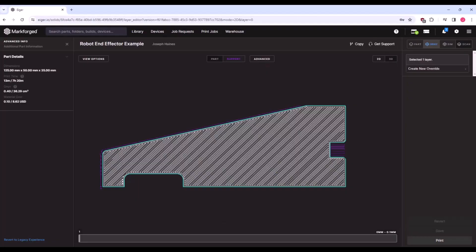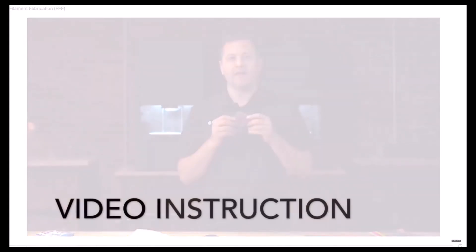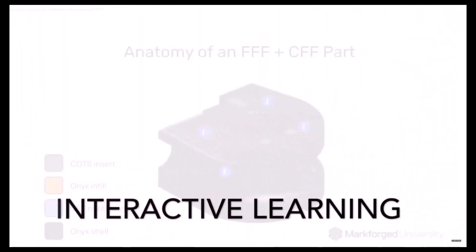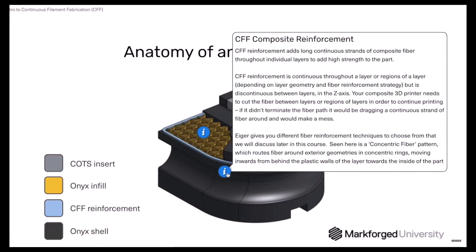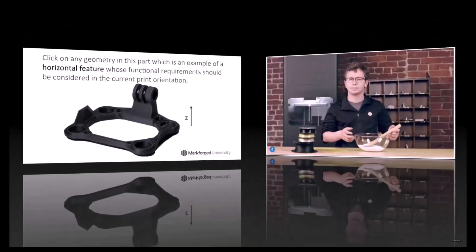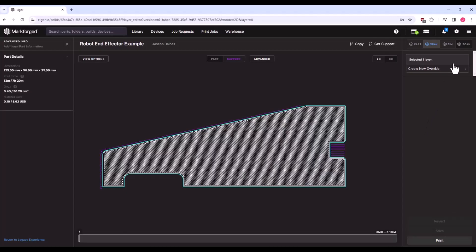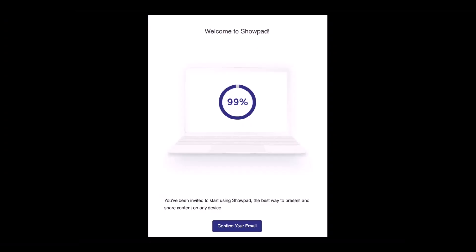No matter how simple the geometry, I always check a part's X-Ray view just to be safe. At this point, you probably have a lot of questions regarding fiber placement strategies and when you can get away with removing supports. All of these questions and much more can be answered in the Markforged University online courses. These courses are great — I was amazed at how comprehensive and consolidated they are. You can access Markforged University under the three-line menu and follow the instructions to confirm your email and get started.